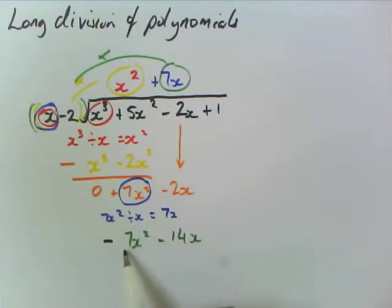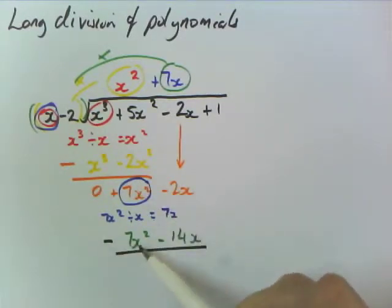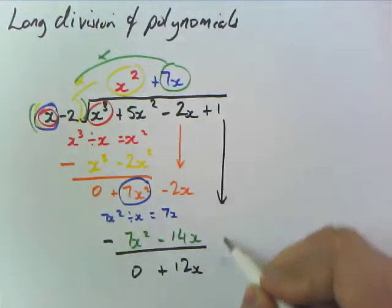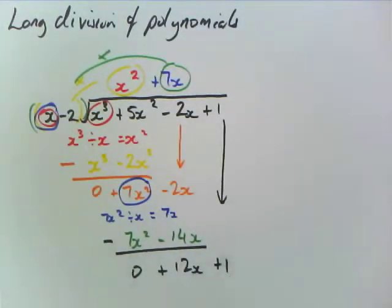And we're going to do a subtraction. 7x squared minus 7x squared is 0, minus 2x minus negative 14x will get us plus 12x. Bring down your term. And we repeat again.